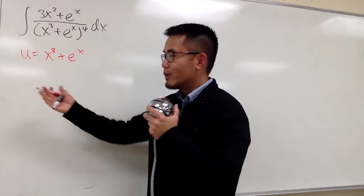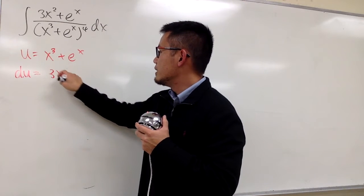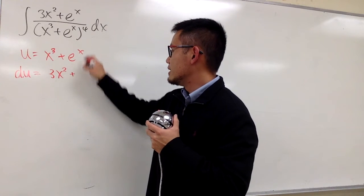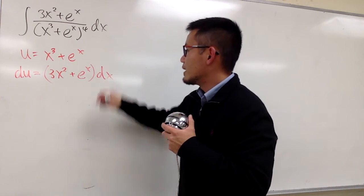And then, I will go ahead and differentiate both sides. We get du equals to 3x squared plus the derivative of that is just e to the x. And the whole thing right here, I should put parentheses and then dx, right?